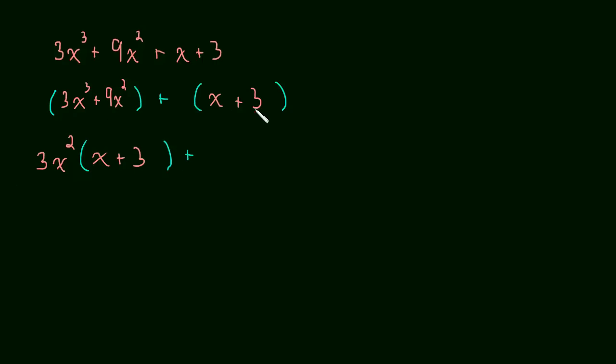And now plus, well, what's common to x and 3? The only thing common to both of those, actually, is just the number 1, right? 1 times x is still x, and 1 times 3 is still 3. So we're going to factor out a 1. It's really not factoring it out. It's always been there. But we're going to write it just to make this more clear.